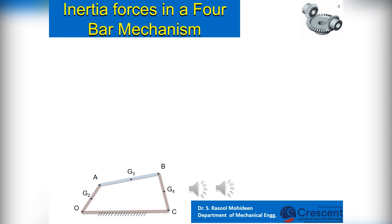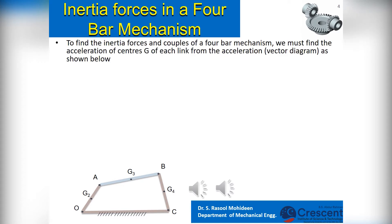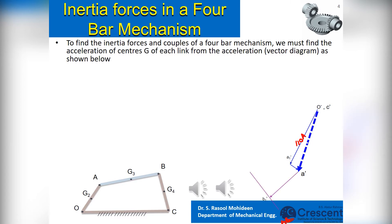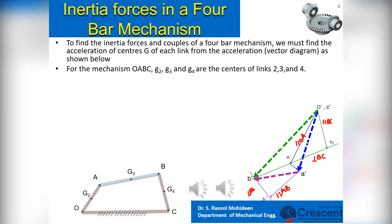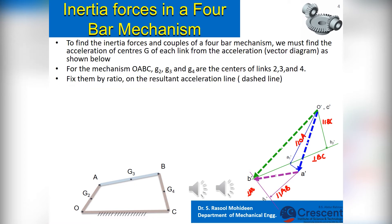Now we will see how to find the inertia forces and couples of a four-bar mechanism when the mechanism is given an input angular velocity of omega at link AB, the driver. Since the inertia force per D'Alembert's principle is minus of mass into acceleration, we must find the acceleration of centers G of each link by constructing the acceleration vector diagram. For the mechanism OABC, G2, G3 and G4 are the centers of links 2, 3 and 4. Fix their position in the acceleration diagram by ratio, on the resultant acceleration line shown as dashed lines.